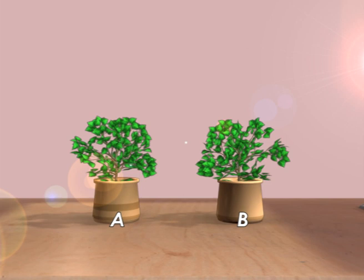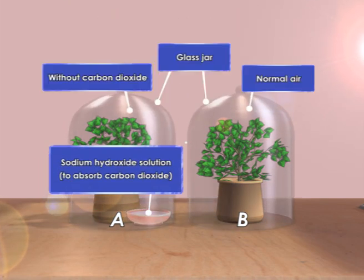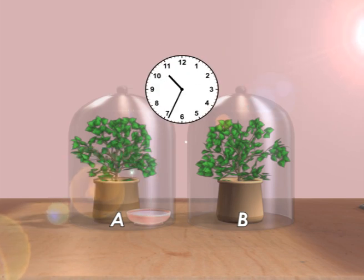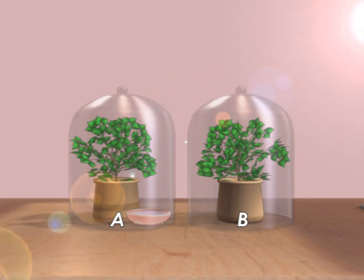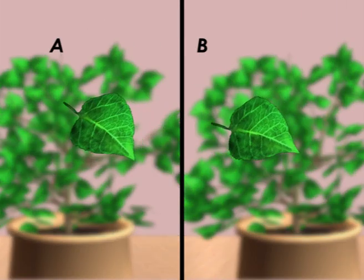Cover potted plant A and potted plant B with a box for two days to remove the starch in the leaves. Then cover the two potted plants with glass jars for two hours. Pluck a leaf from the two potted plants and test for the presence of starch.